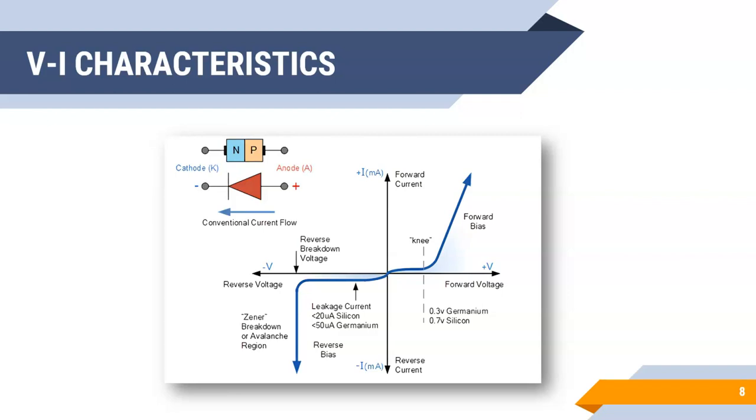In reverse bias, very first, we will have leakage current in the range of microamps. After that, breakdown will happen in the PN junction diode.